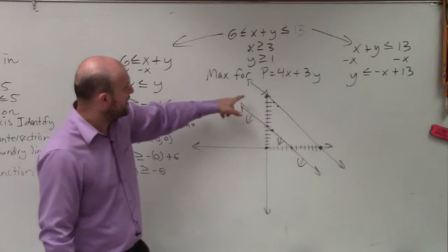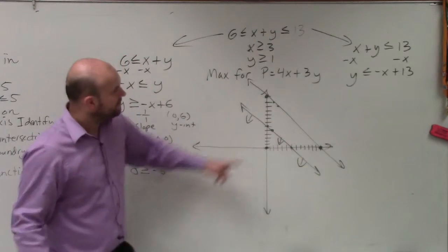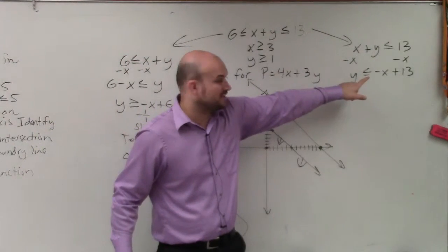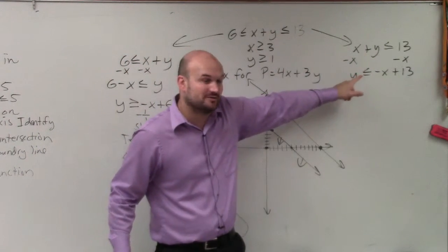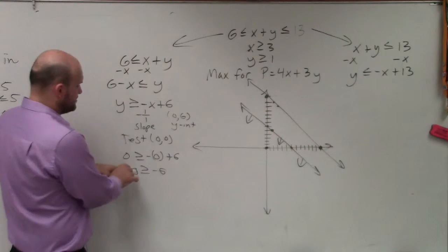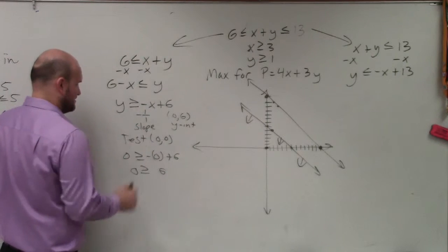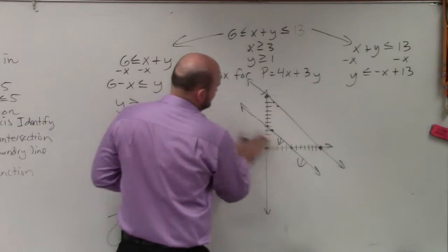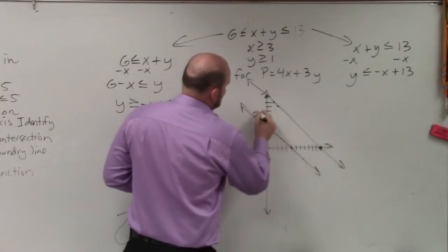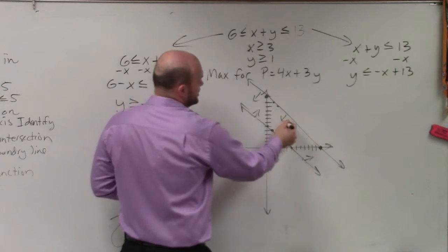Now I just need to graph x is greater than 3, which is a vertical line. 1, 2, 3. Instead of using a test point, I know that y is less than or equal to this. This one, y is less than, so you're going to shade below.